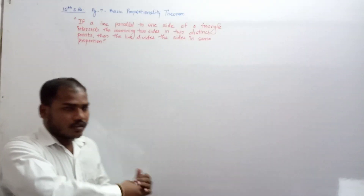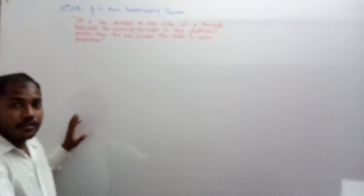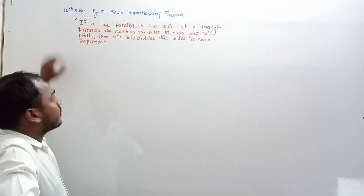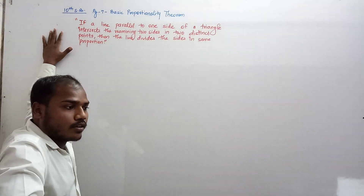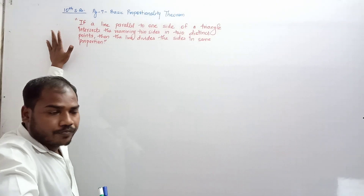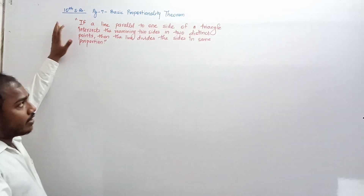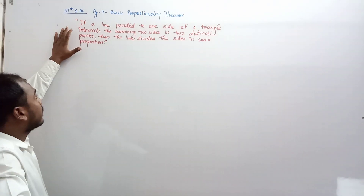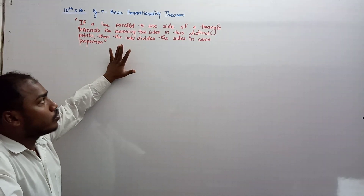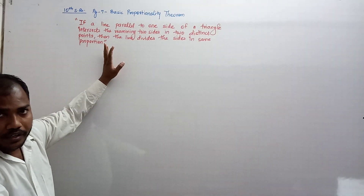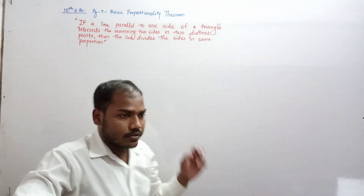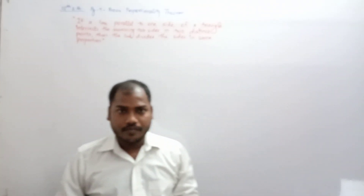Hello everyone. Now we are going to discuss a theorem in the chapter on Similarity. The first theorem of the tenth state board is the Basic Proportionality Theorem. The theorem statement is: if a line parallel to one side of a triangle intersects the remaining two sides in two distinct points, then the line divides the sides in the same proportions.